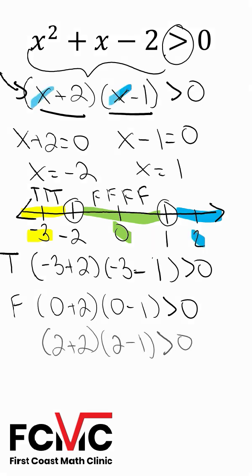Last, let's check that 2. We're going to get 2 plus 2 times 2 minus 1 is greater than 0. This, again, is a true statement. So we're going to write true above our interval here.